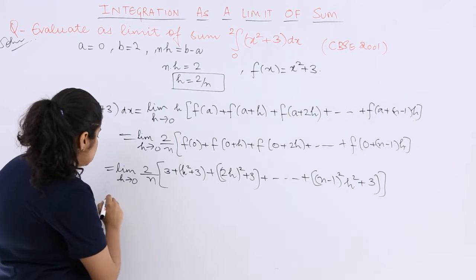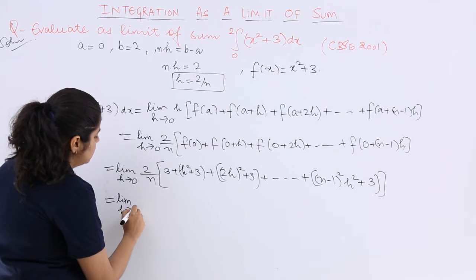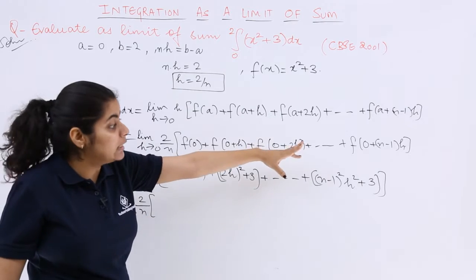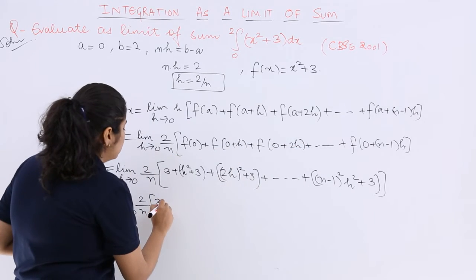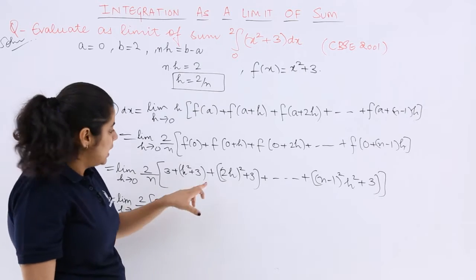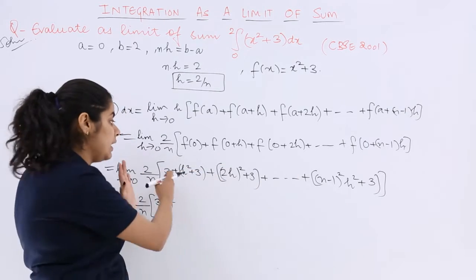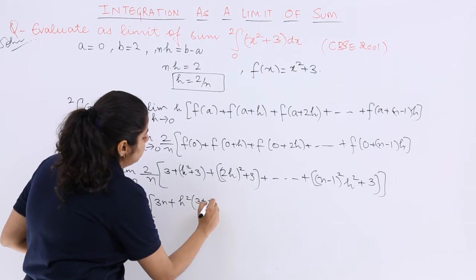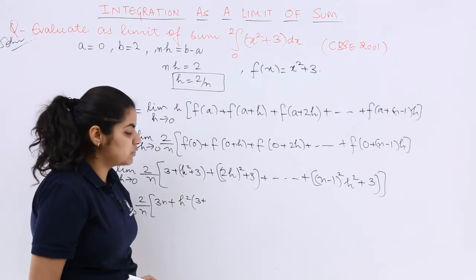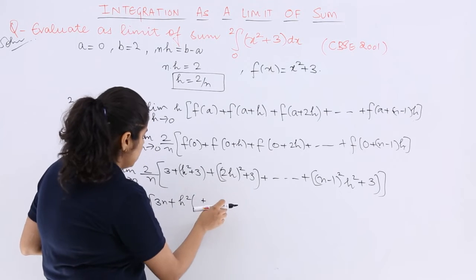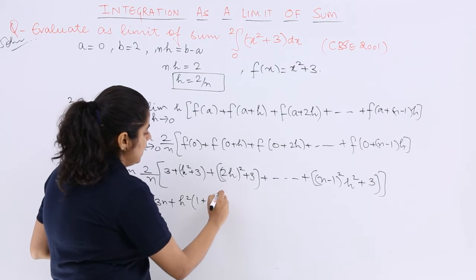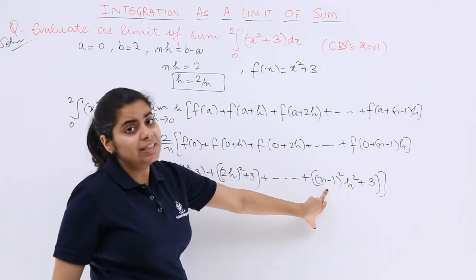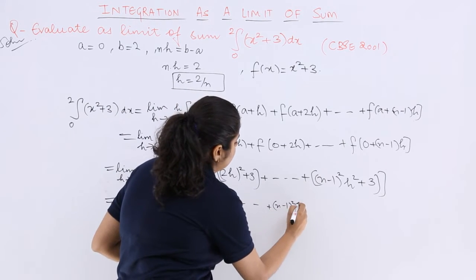Now let's take certain things common. Limit H tends to 0, 2 upon N. There's 3, 3, 3 and so on till the last term, total number of terms N. So 3N plus H square from everywhere except the first term, so you take H square common. You are left with 1 here, so it is 1 plus 2 square plus 3 square and so on till N minus 1 whole square.